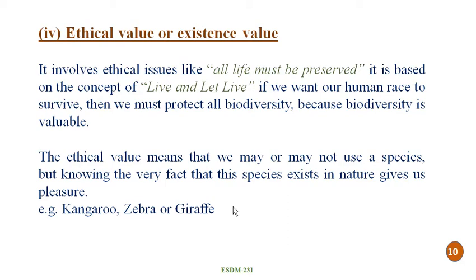The fourth value is ethical value, also called existence value. It involves ethical issues like: all life must be preserved, and it is based on the concept of 'live and let live.' If we want our human race to survive, then we must protect all biodiversity because biodiversity is the value of life. Ethical value means that we may or may not use a species, but knowing the very fact that these species exist in nature gives us pleasure.